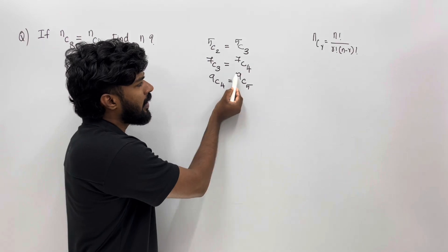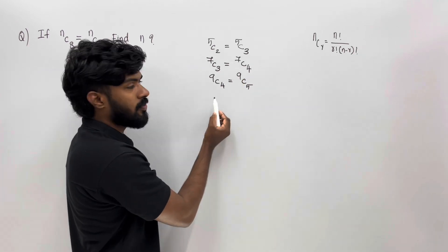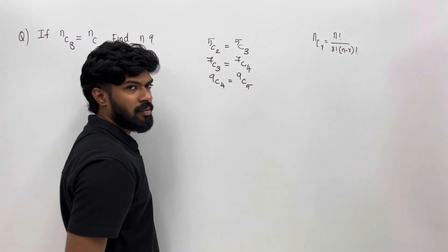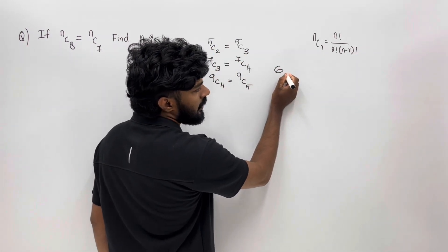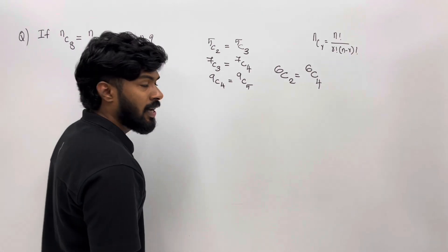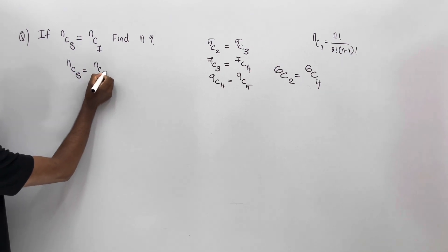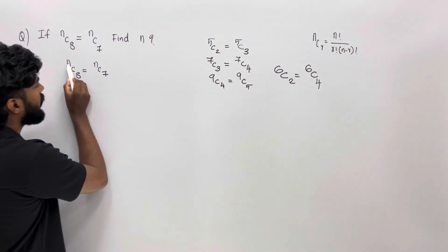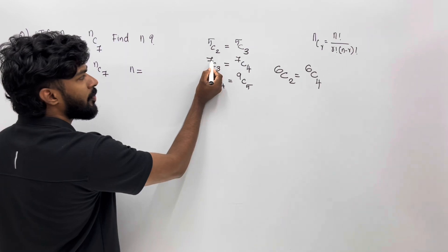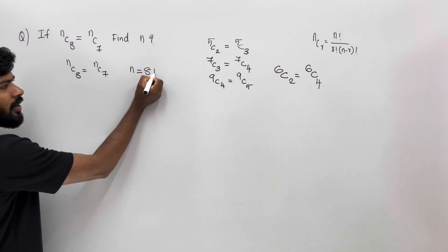For 9C5, you can do it two ways: 4 times 5 times, 3 times 4 times 8, 2 times 5 times. Simple idea. For 6C2 equal to 6C, if you get two times 4 times 4, you can work through it. For nC8 equal to nC7, we can do it: 4 times 5, 4 times 5, 3 times 5, 4 times 6, and 8 plus 8 gives 10.